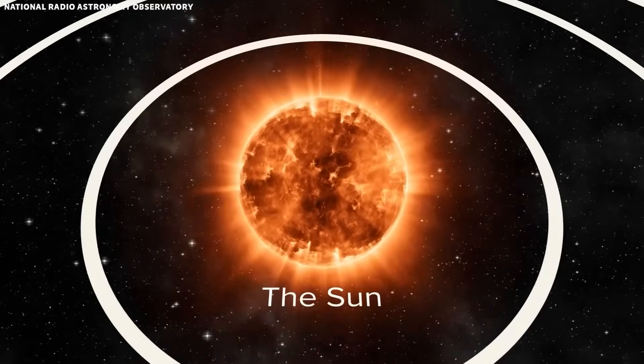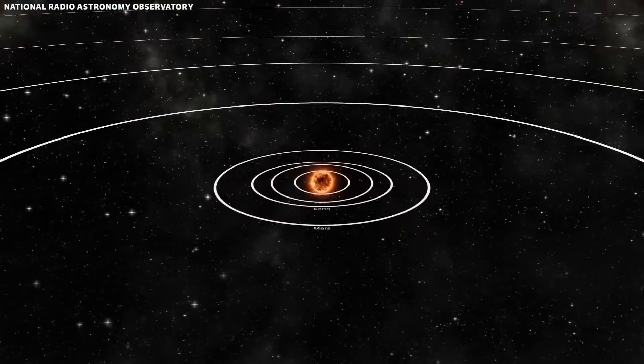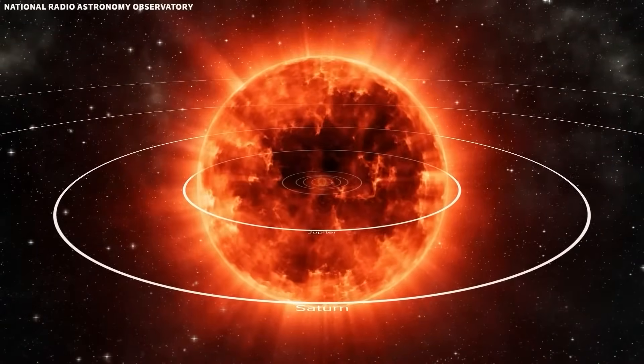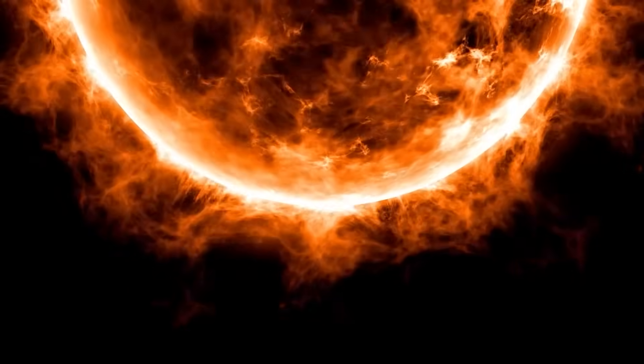If it took the place of our sun, its edges would extend all the way to Jupiter. How can a single star achieve such colossal proportions?